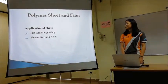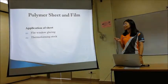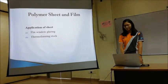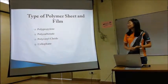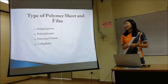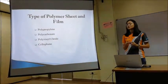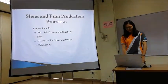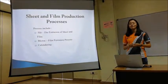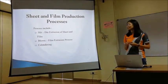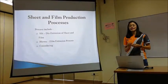For the application of sheet, it is widely used in flat window glazing and thermoforming stores. There are 4 types of polymer sheet and film, which are polypropylene, polycarbonate, PVC, and also xenofen. The processes included in sheet and film are slit-die extrusion of sheet and film, blown film extrusion process, and calendaring.